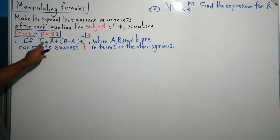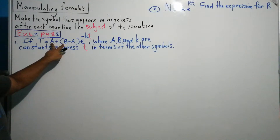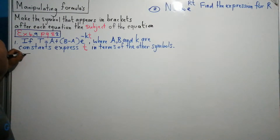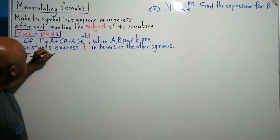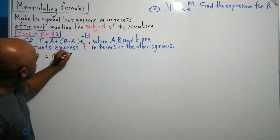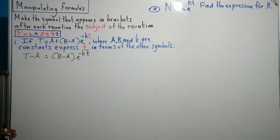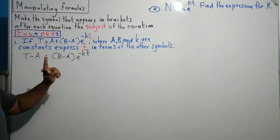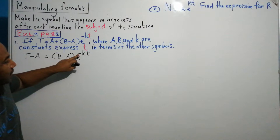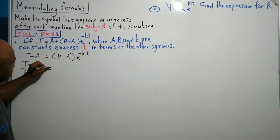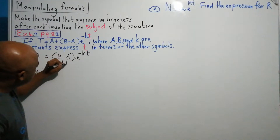Since there are two terms on the right-hand side, let's make it just one term. I can transpose A to the left-hand side. So T minus A is equal to B minus A times E to the power minus KT. Now there's only one term on the right-hand side — this multiplication is regarded as one term. I want E to the power minus KT alone, so I can divide by B minus A. So T minus A divided by B minus A is equal to E to the power minus KT.